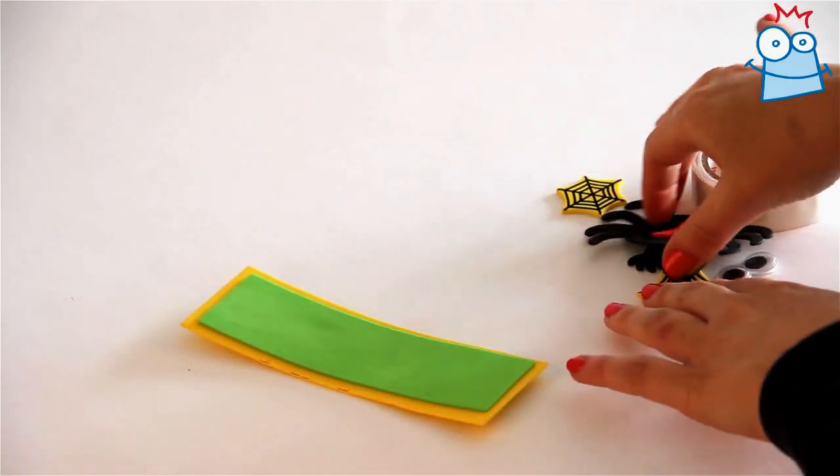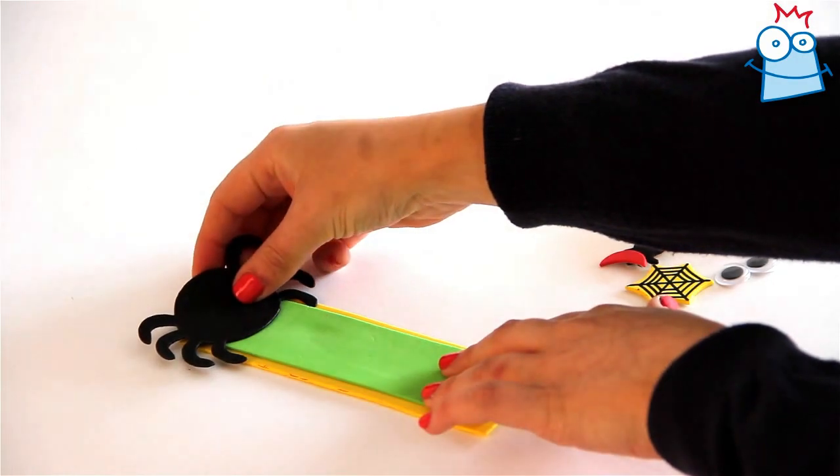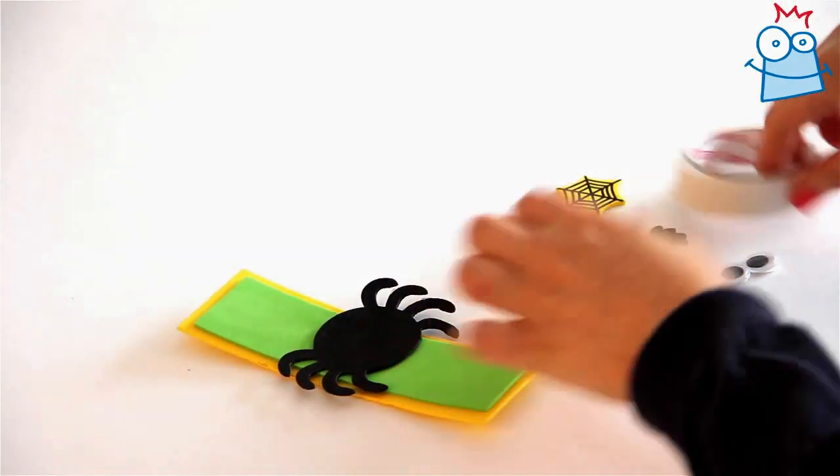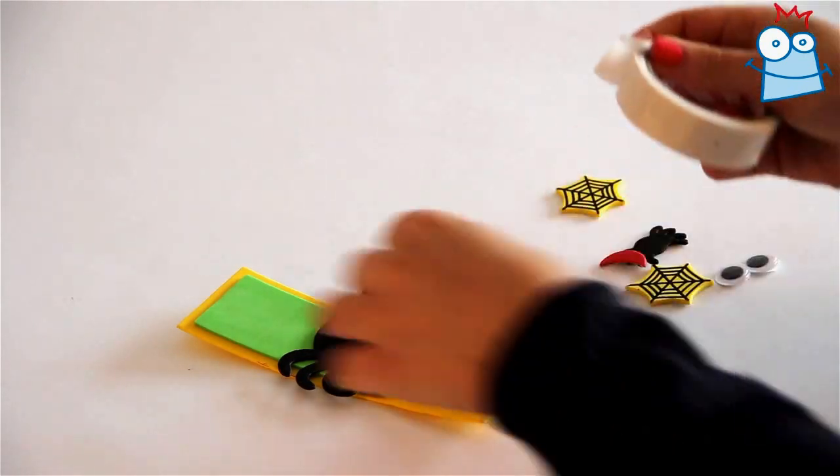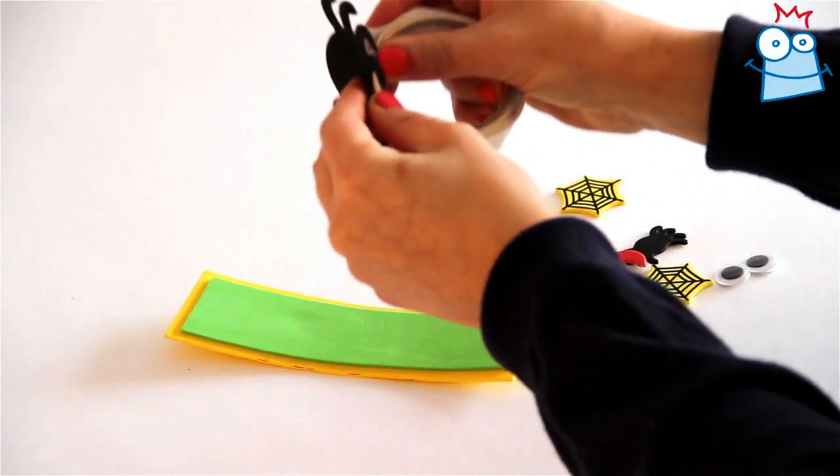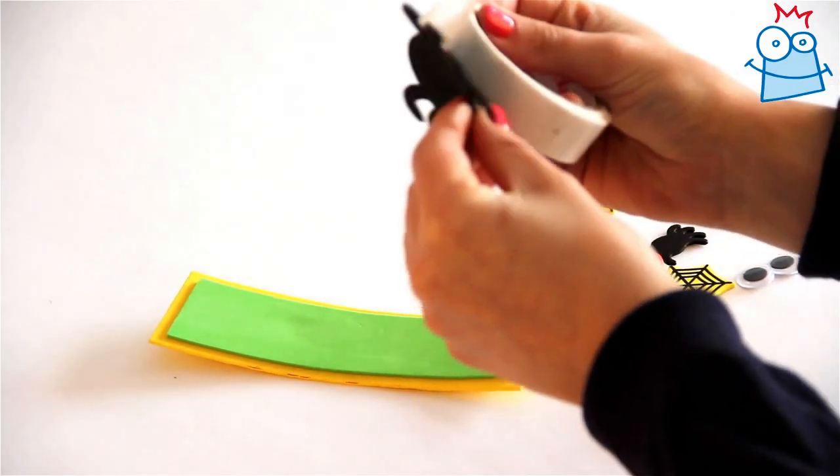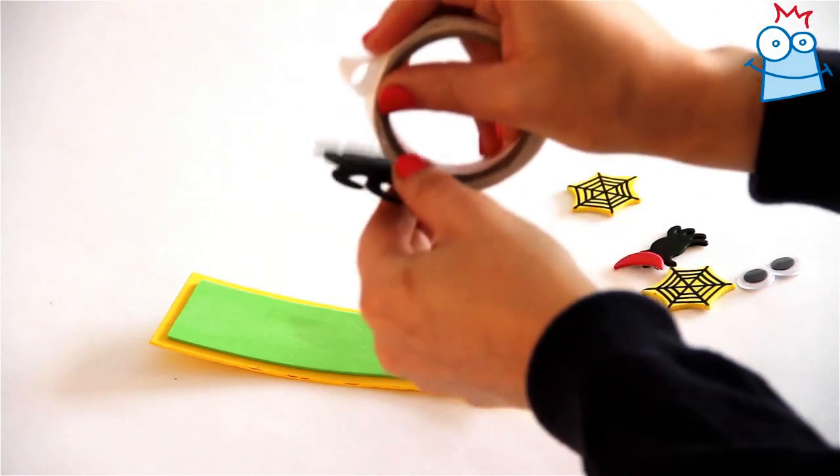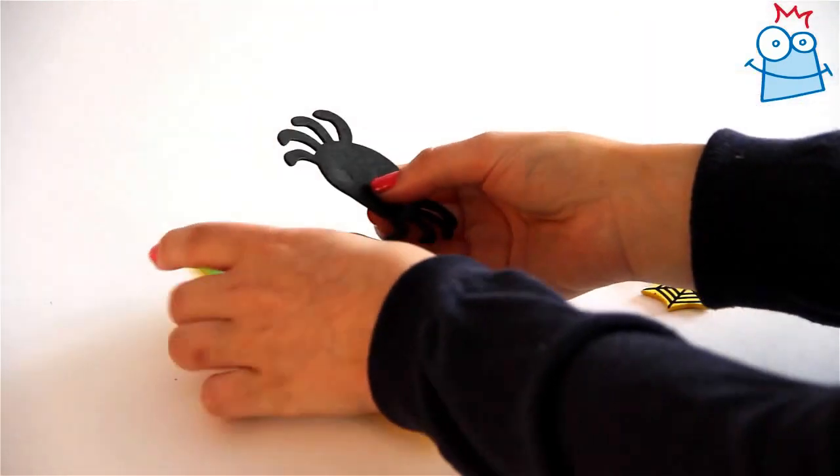Now take the spider shape. This is going to go at the top of your bookmark. Apply foam glue or glue dots to the back of the shape, and then press it firmly onto the top of the bookmark.